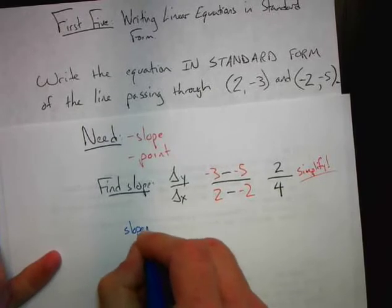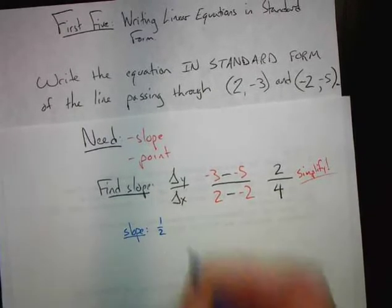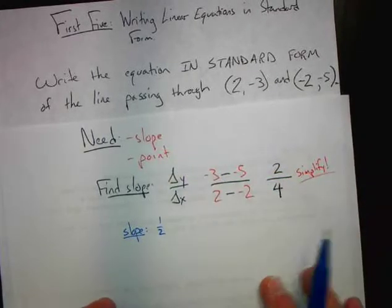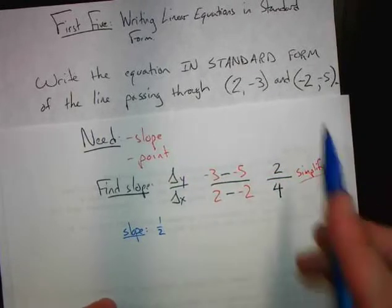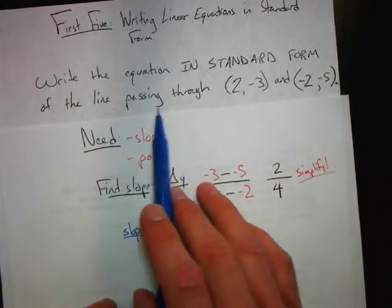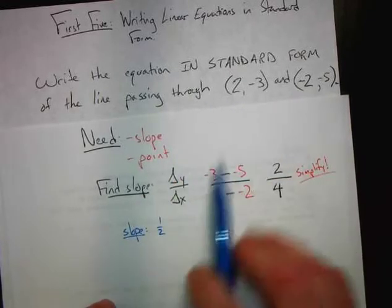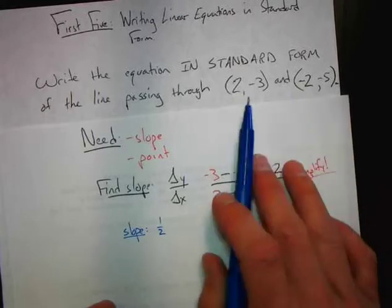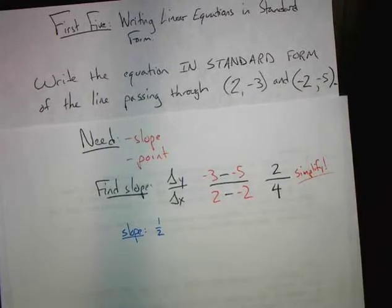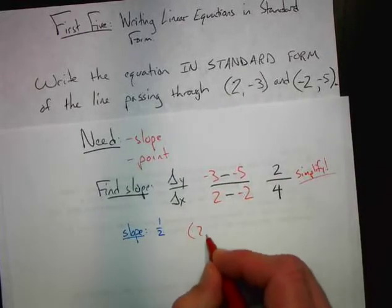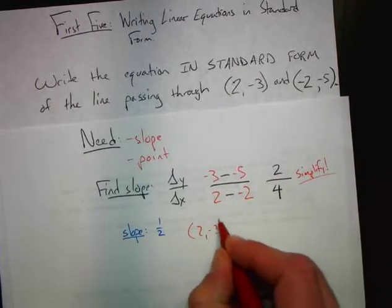So the slope we're going to use is positive 1/2. Remember, we need a slope and a point. We go back to the question — we have two ordered pairs and we now have a slope. We can use either ordered pair for our point. I'll just use the first ordered pair of (2, −3).